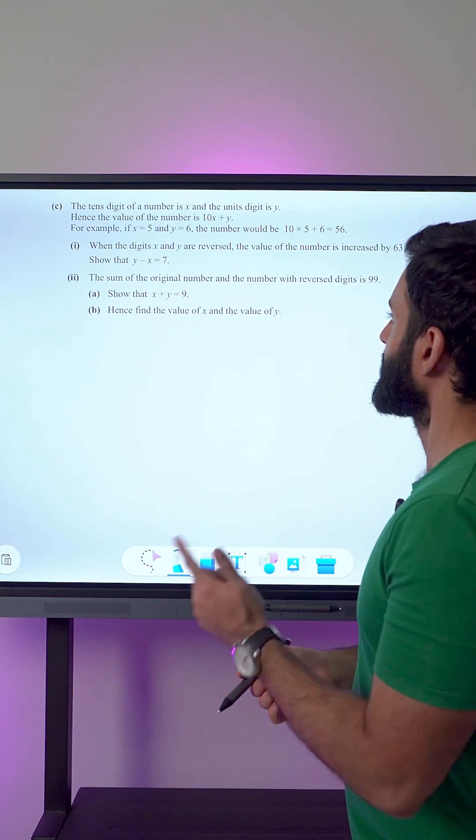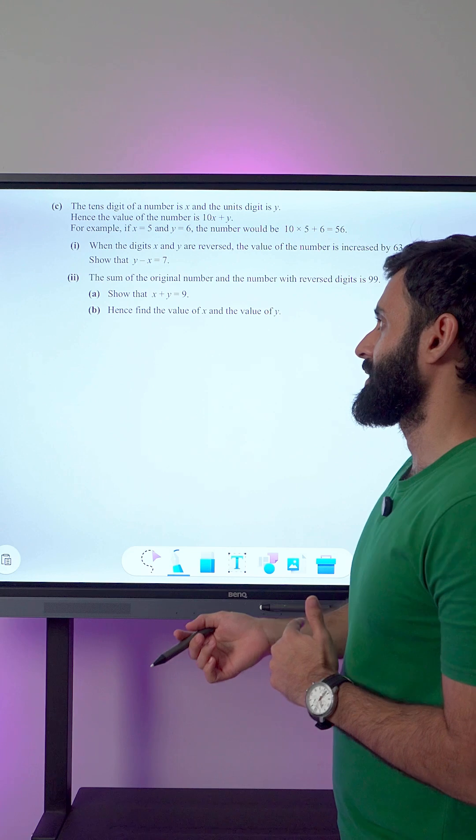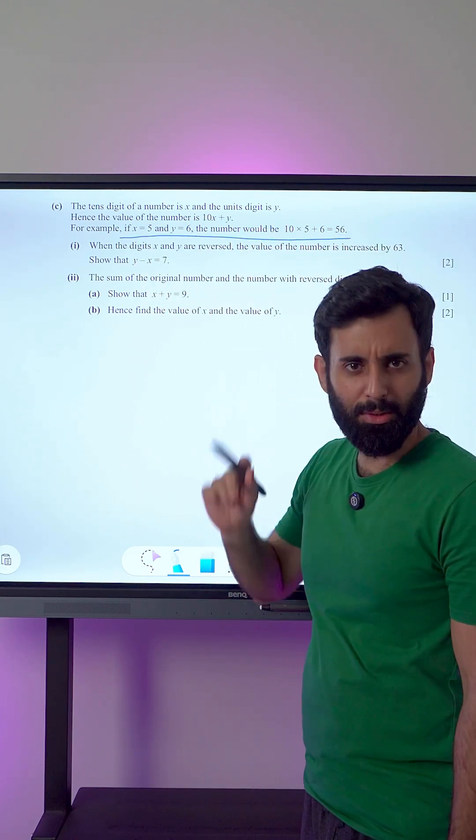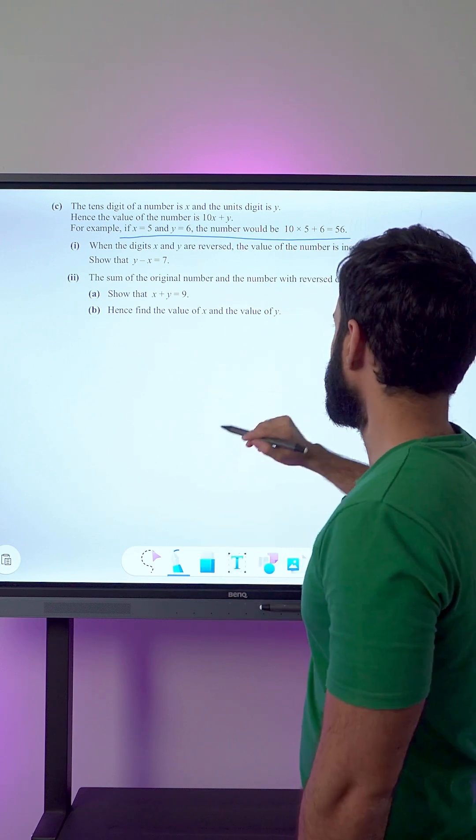When the digits x and y reverse, the value of the number is increased by 63. Now let's focus on this for a minute. If you have a number 56, we need to break it down.